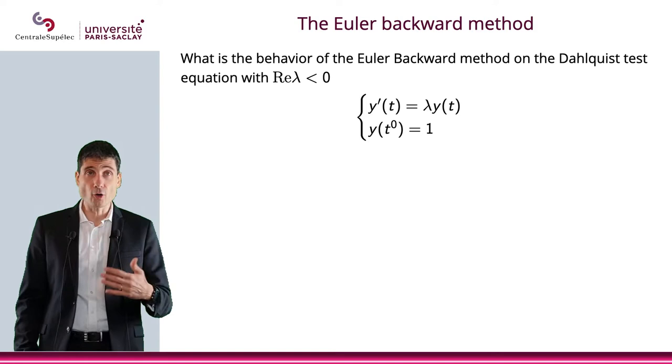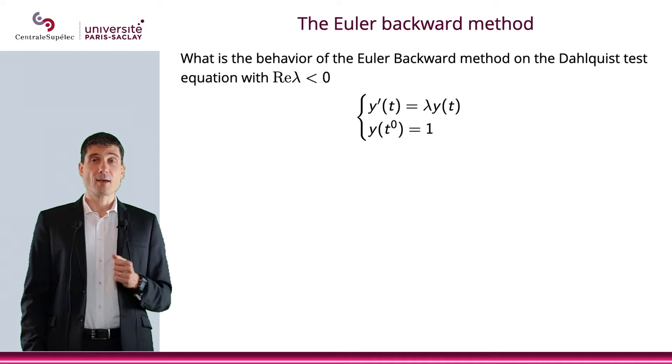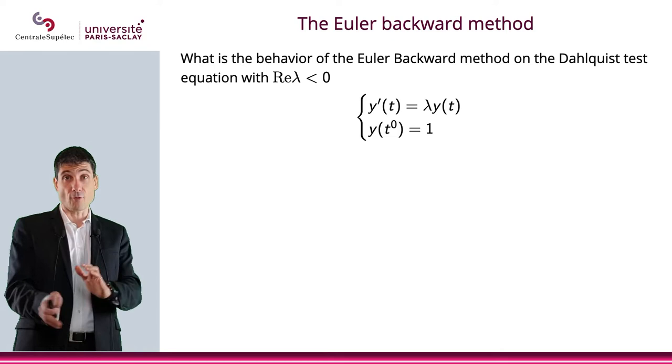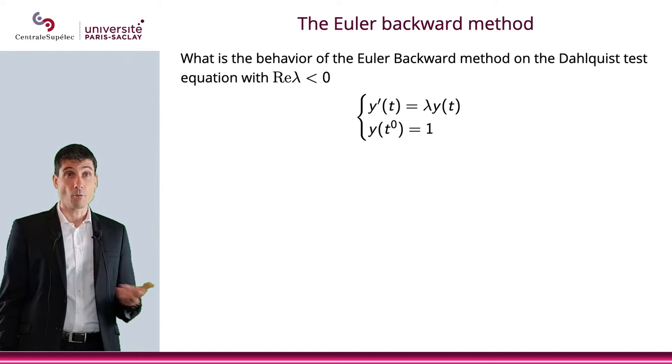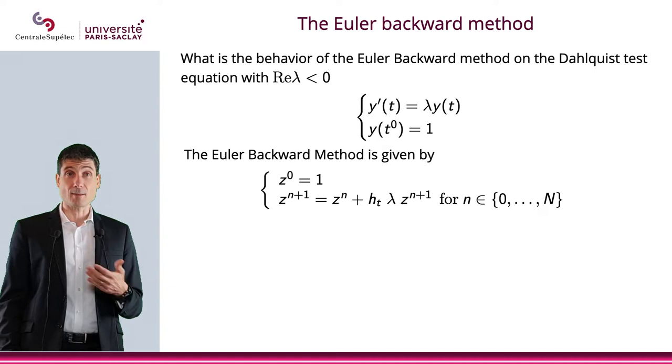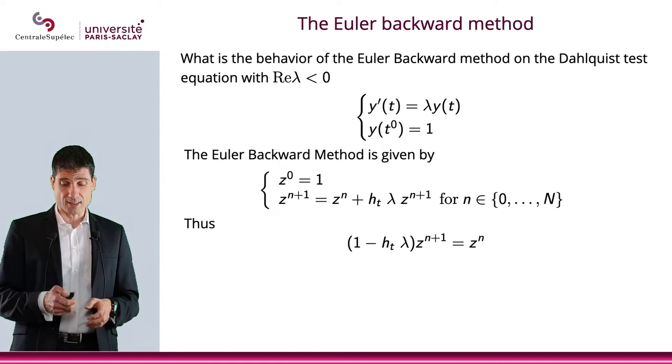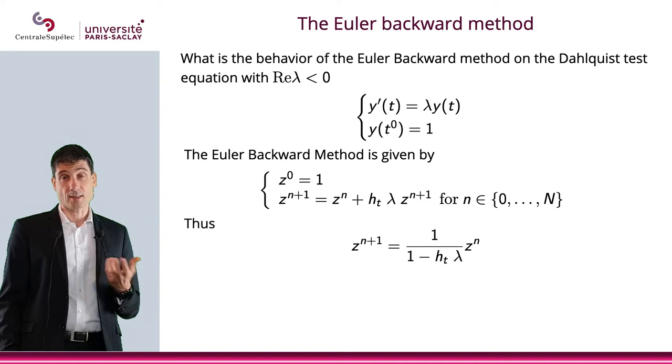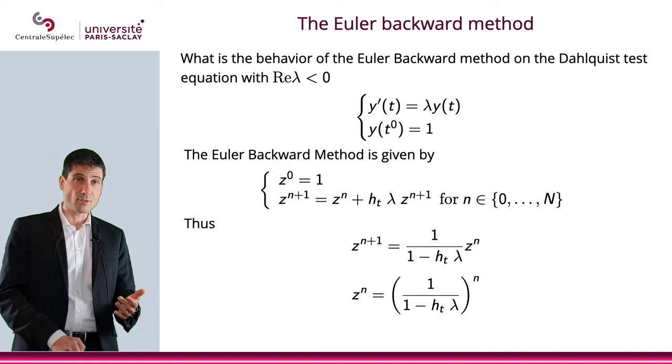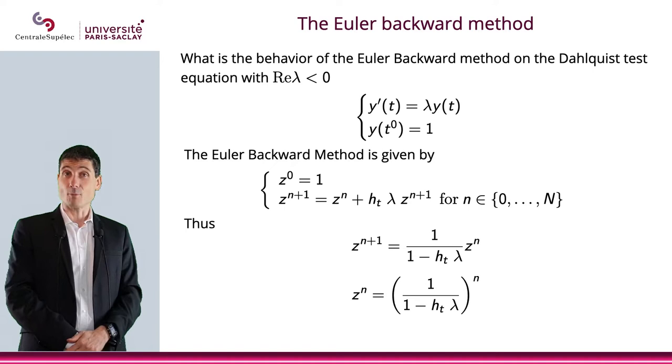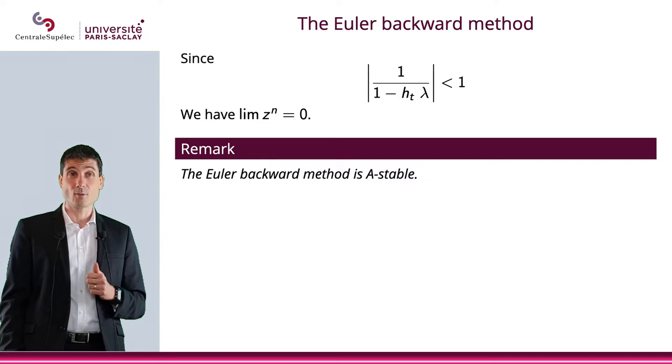What is the behavior of the Euler backward method on the Dahlquist test equation with Re(λ) < 0? We have zⁿ⁺¹ = zⁿ + hₜλzⁿ⁺¹. Let me put all the zⁿ⁺¹ on one side and all zⁿ on the other side. What I obtain is zⁿ⁺¹ = (1/(1 - hₜλ))zⁿ. So zⁿ = (1/(1 - hₜλ))ⁿz⁰. Obviously, 1/(1 - hₜλ) is smaller than 1, which means that we have lim zⁿ = 0. This means the Euler backward method is A stable.